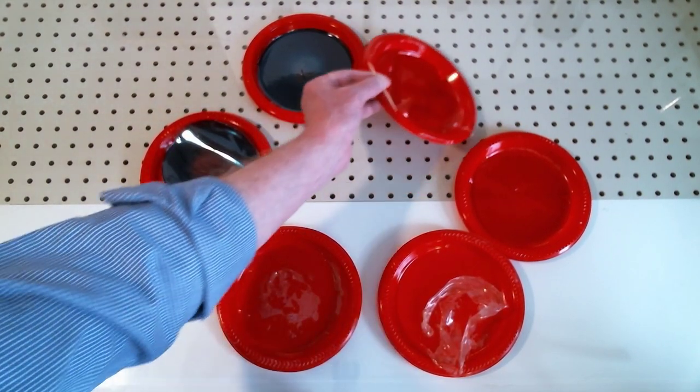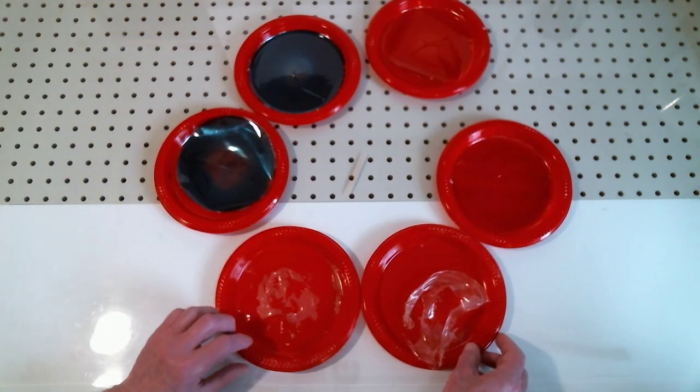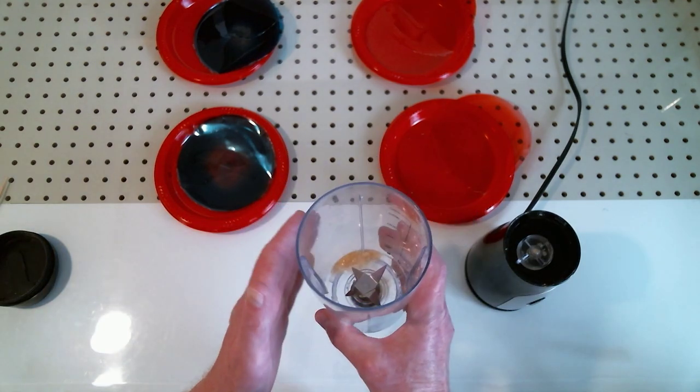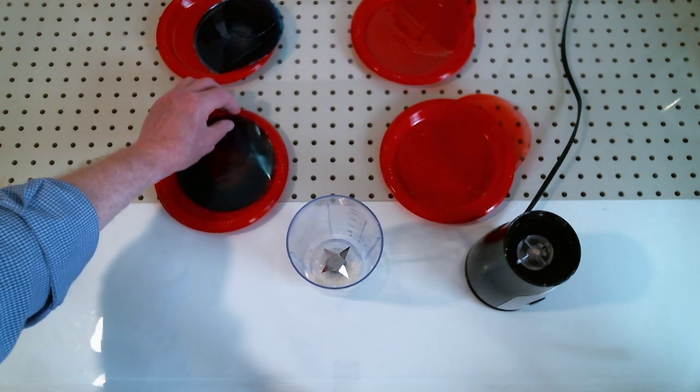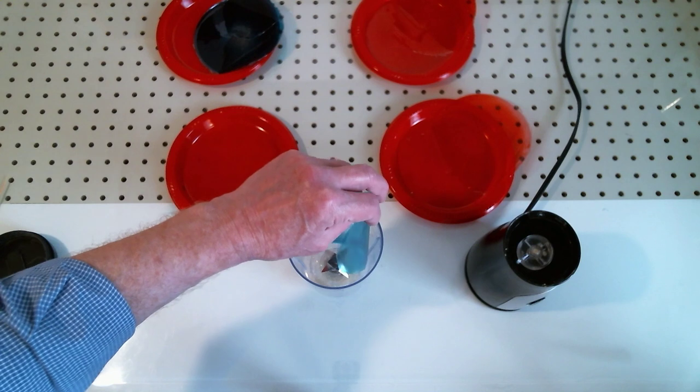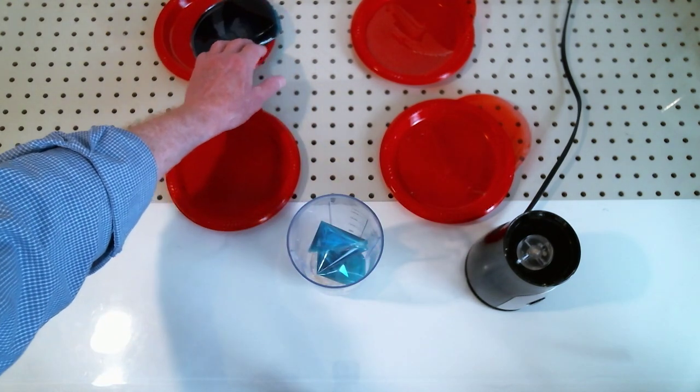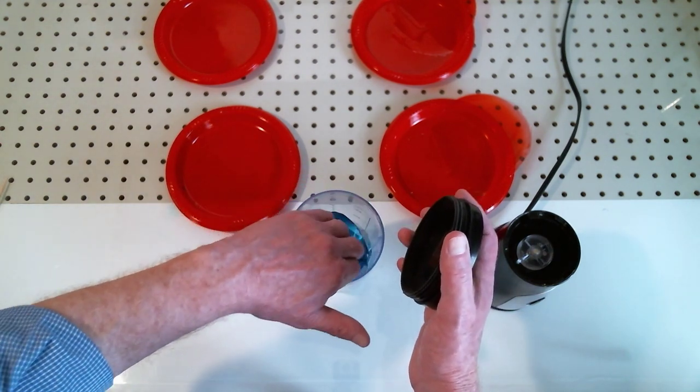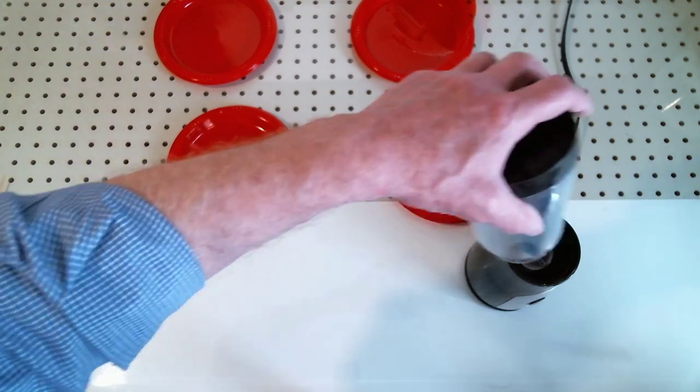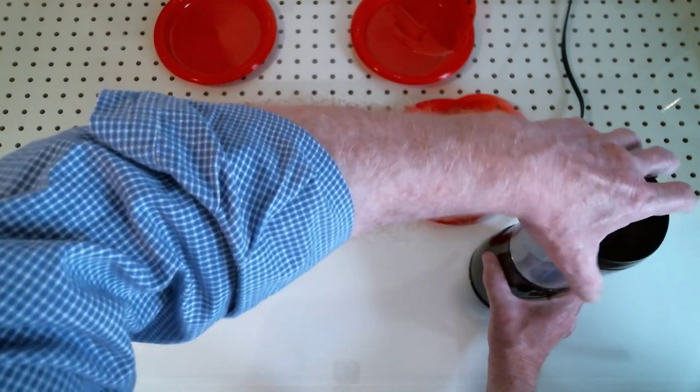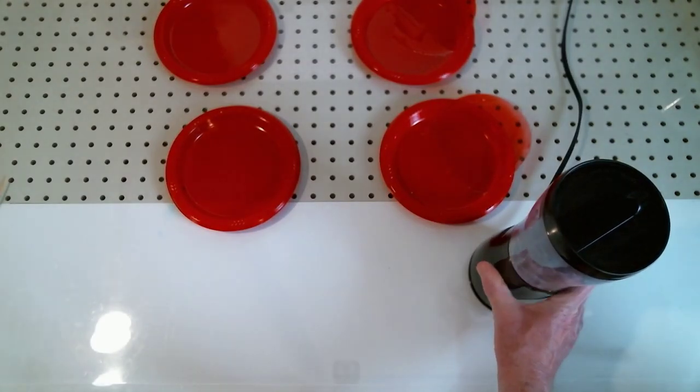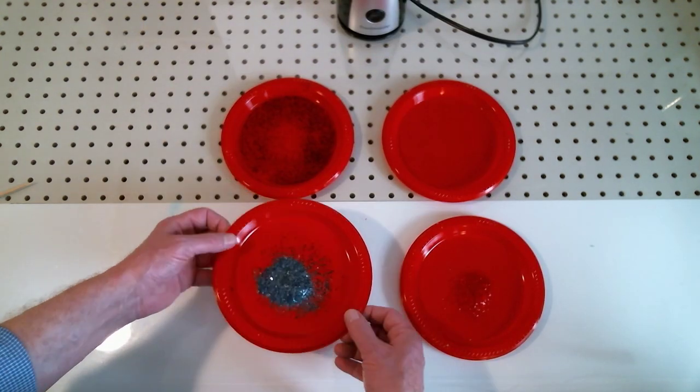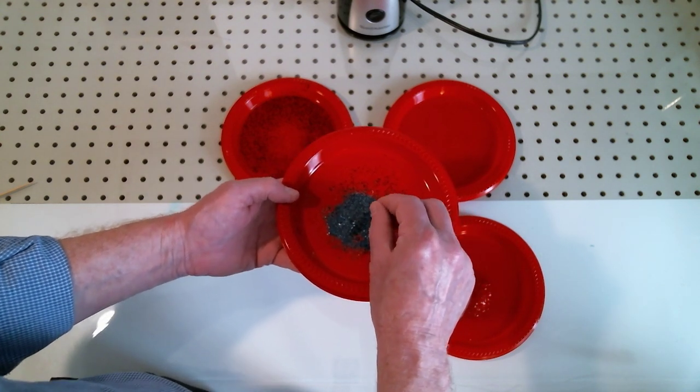Now we're going to take these and pop them into our blender and grind it up. Okay, so I have a little bit of the clear in the blender already ground up. I'm going to leave that in there and I'm going to add the blue. And I'm thinking just a few clear sparkles mixed in with the blue will be kind of cool. So that's why I'm doing that.